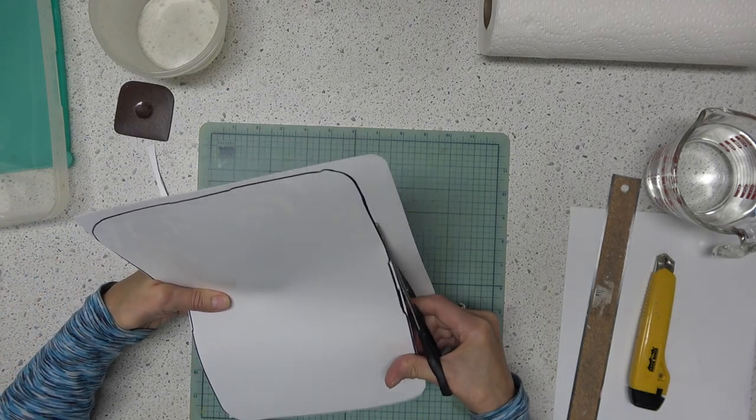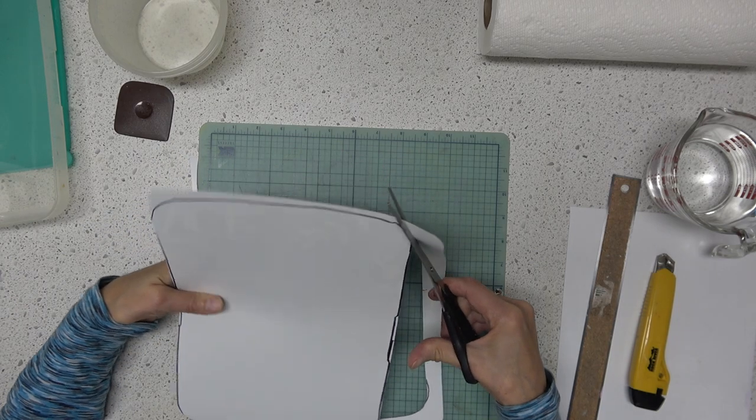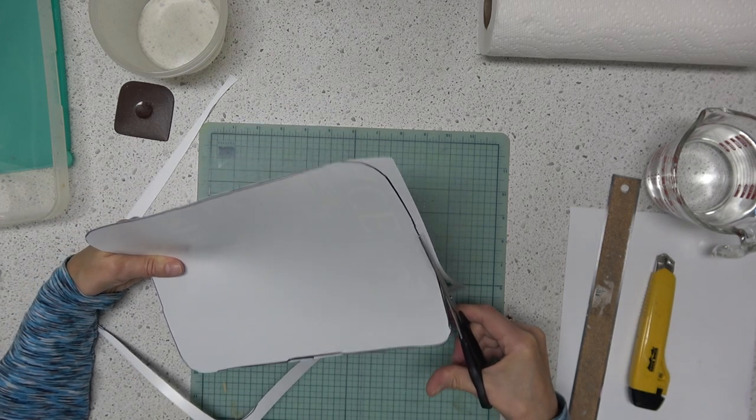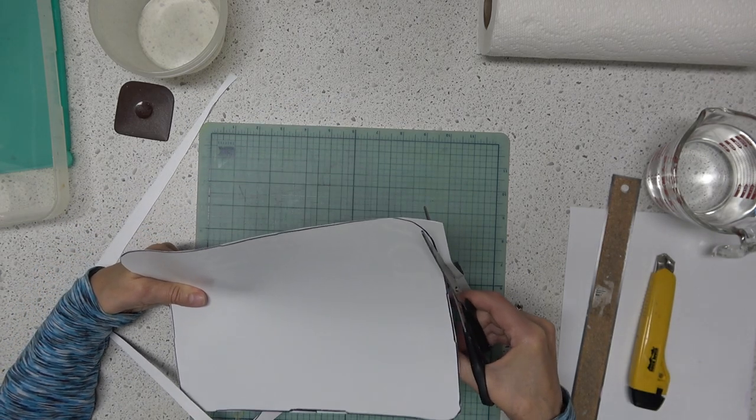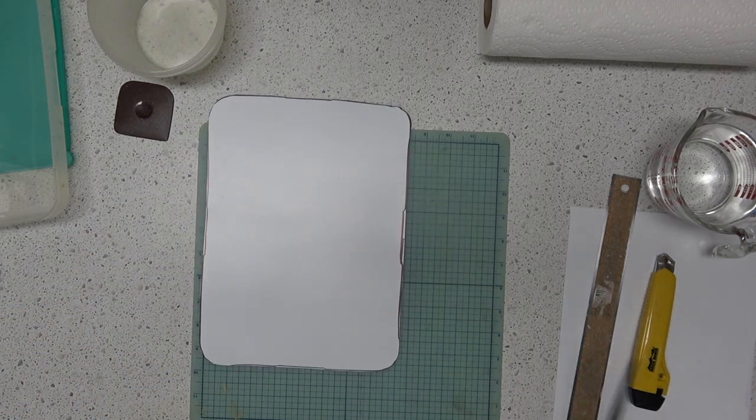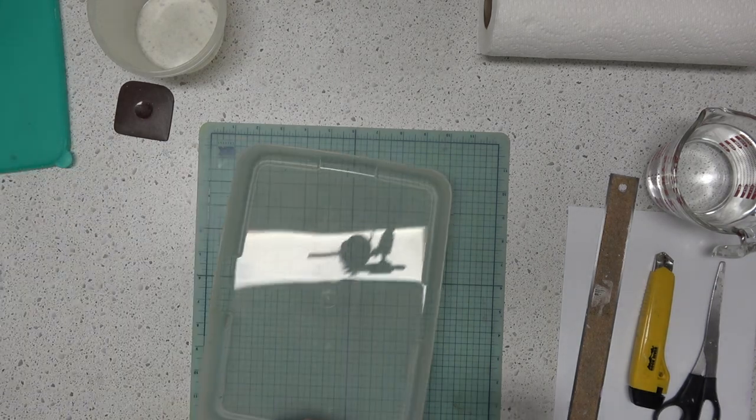When I'm done, I could use rubbing alcohol to remove the Sharpie from the plastic if you want to clean it up. Let's see how it goes.